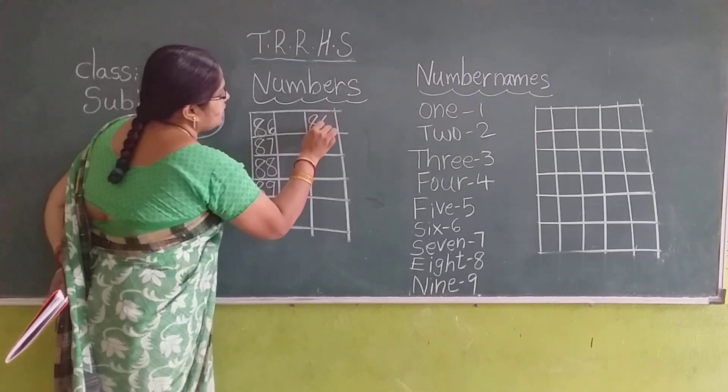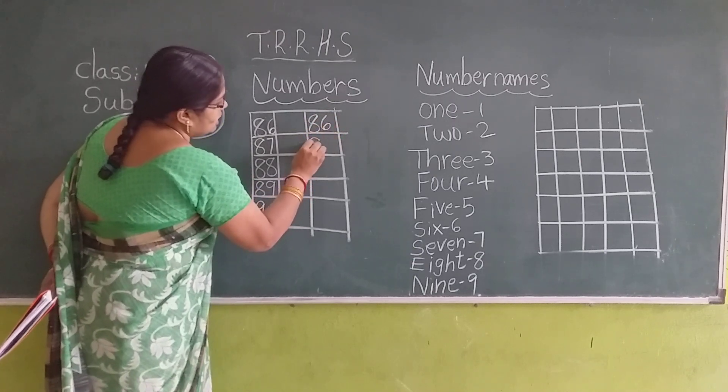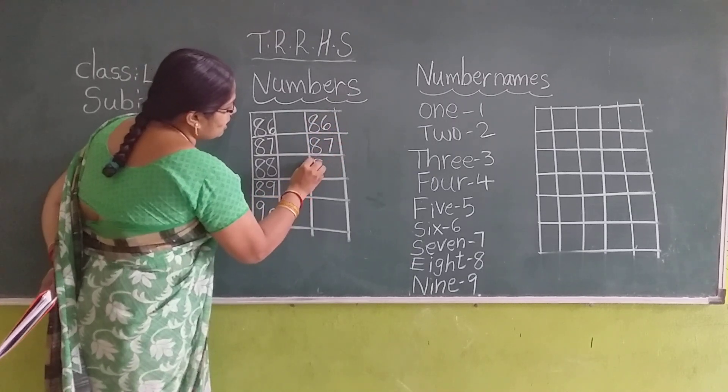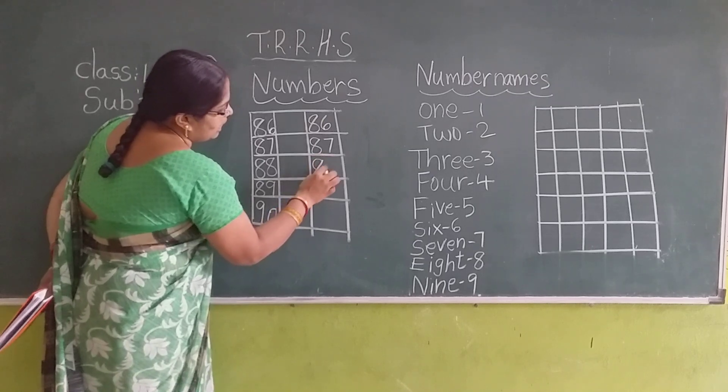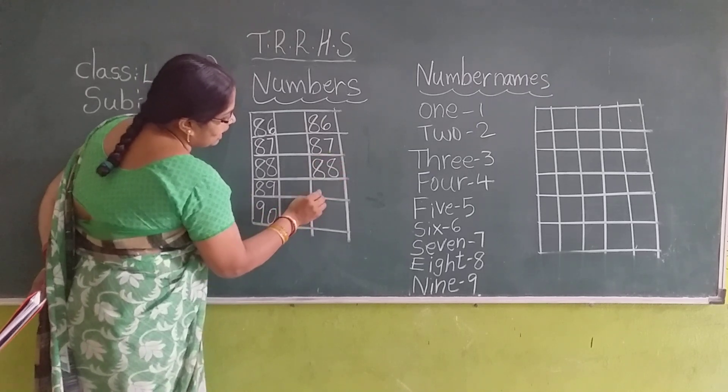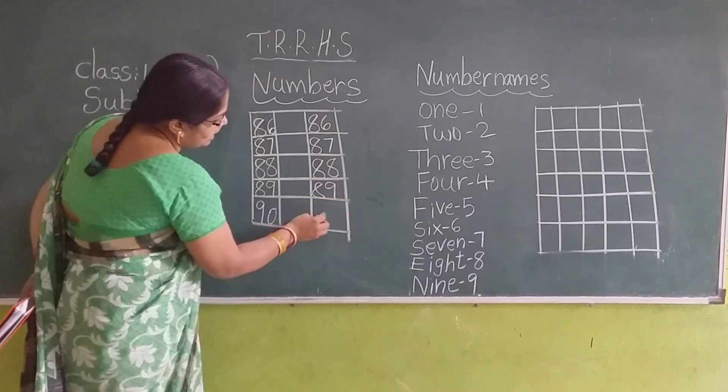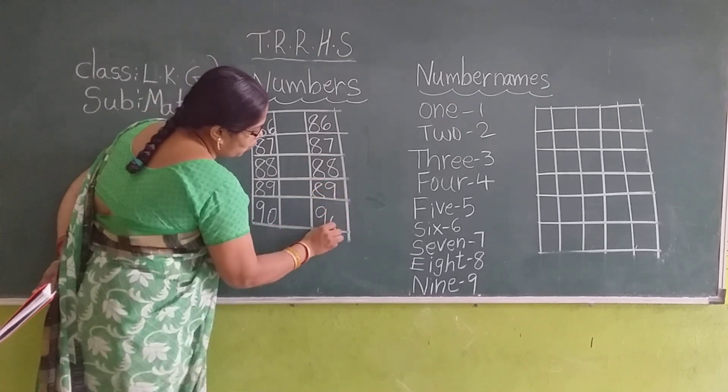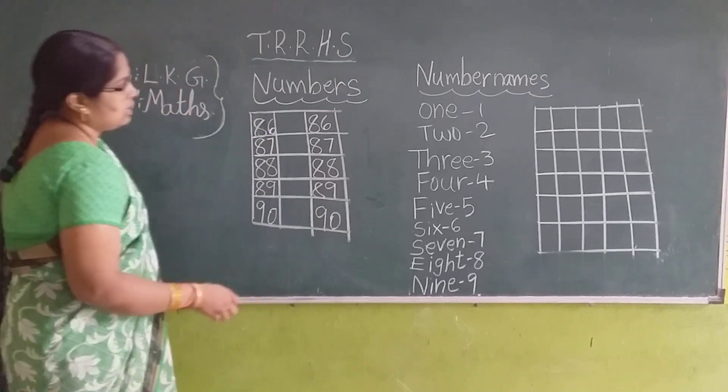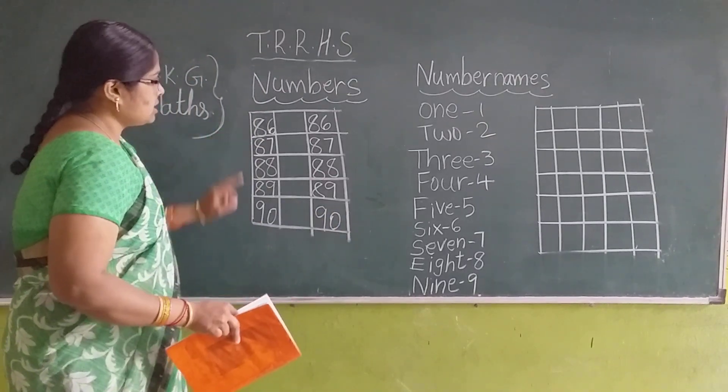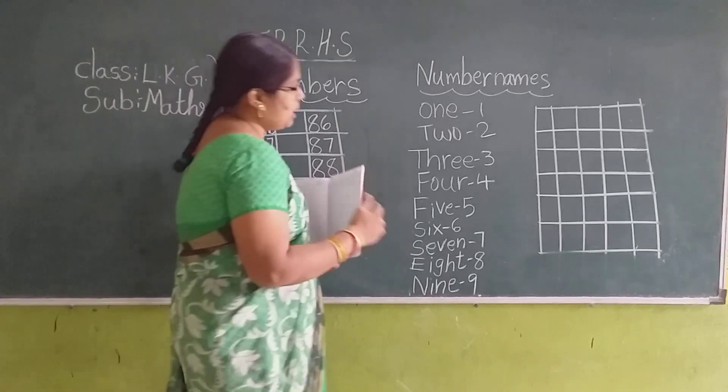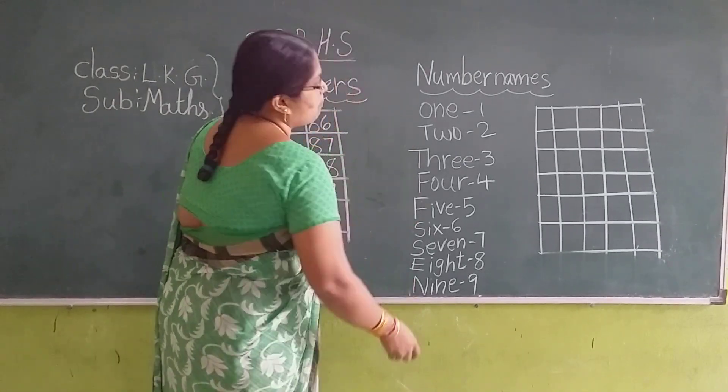8, 6, 86. 8, 7, 87. 8, 8, 88. 8, 9, 89. 90. We completed numbers 86 to 90 and number name 1 to 9 completed.